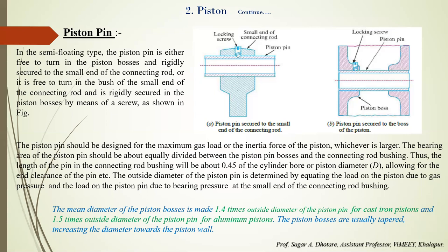If the clearance is too little, it leads to piston seizing. Generally, the piston barrel clearance for cast iron is 0.005 to 0.007 times the piston diameter, and for aluminum it is 0.01 times the diameter. For the piston skirt in cast iron, the clearance is 0.01 to 0.0015 times the piston diameter, and for aluminum it is 0.002 to 0.0025 times the piston diameter.